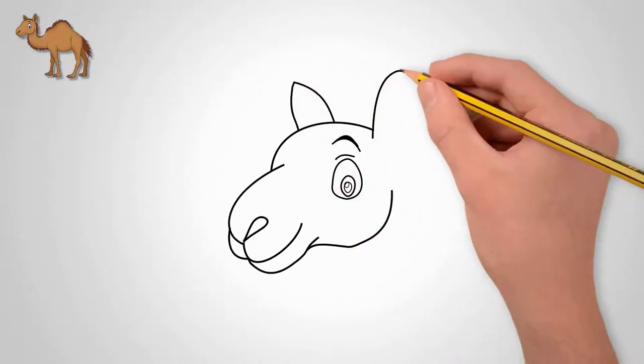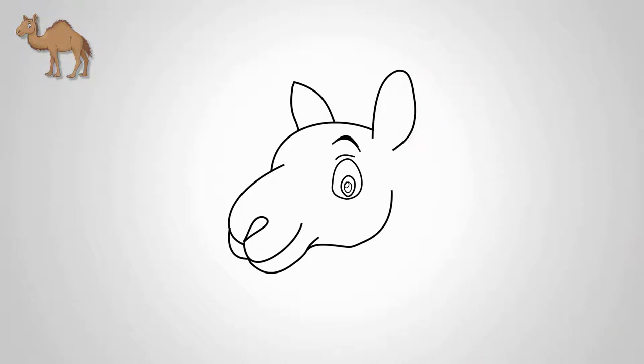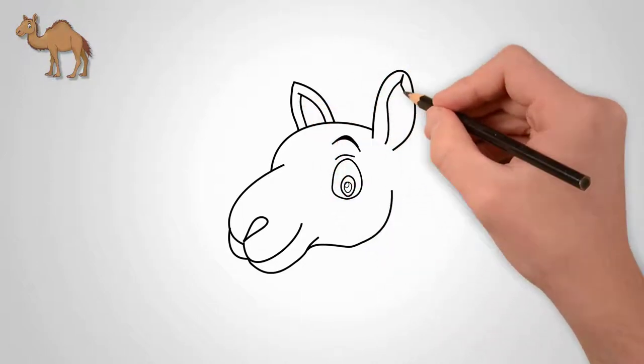Draw an eyebrow over the eye. We can see only one eye. The other eye of the camel is on the back of the head.